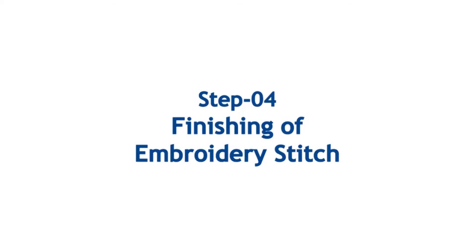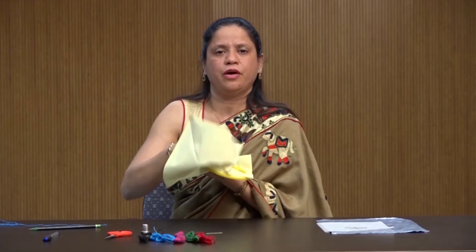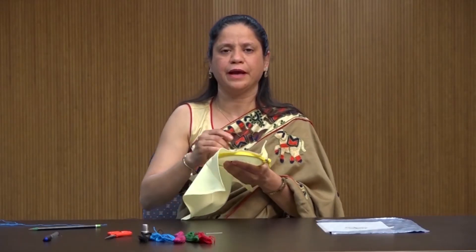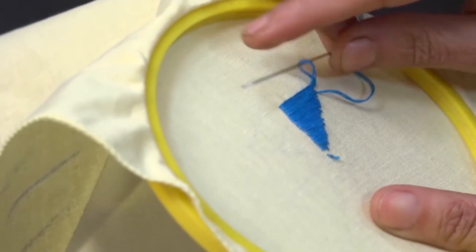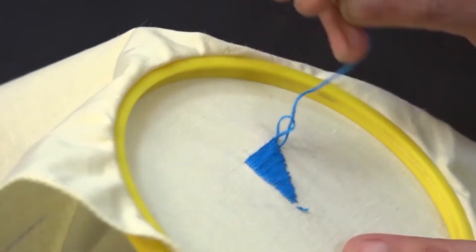To end the stitch, take the thread to the back side of the fabric and make a loop. Then pull the thread from the loop to end the stitch.